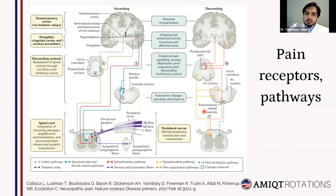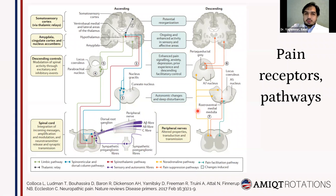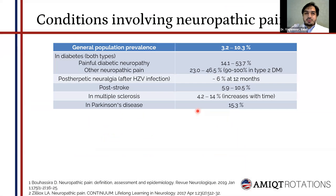In the descending pathway, nuclei in the brain stem inhibit pain descending to the spinal cord, while the ascending pathway comes from the periphery. The locus coeruleus produces more epinephrine, and several neurotransmitters have important roles in pain modulation.